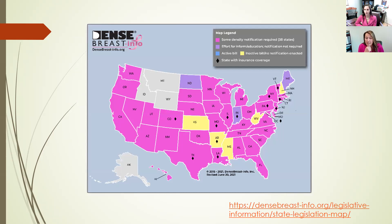This is an interesting map showing all the states that have some type of requirement that women need to be notified of their breast density. Each state has a slightly different law, and you can see there are a few states that don't have any requirement whatsoever. Not every state has laws stating that insurance companies need to pay for enhanced screening; the states with the black diamonds have laws that require insurance companies to pay, and hopefully we'll see that increase as time goes on.